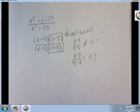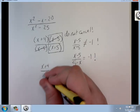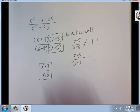So this and this are the ones that cancel. And now I'm left with x plus 4 over x plus 5. Alright. That's the other thing I wanted to bring up. They look similar but they're not.